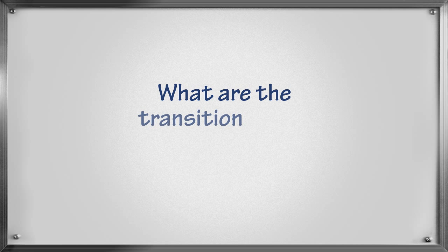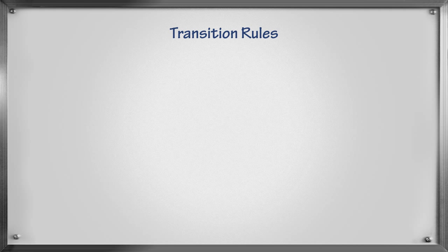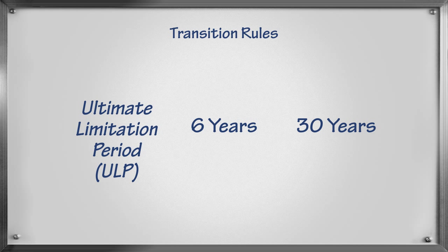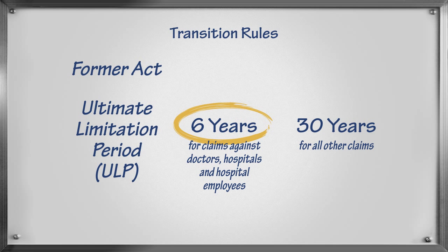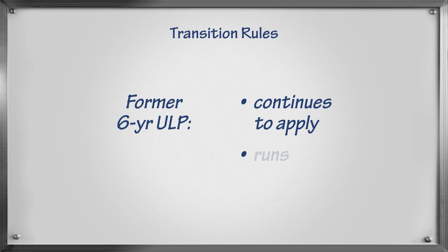The transition rules govern two situations depending upon whether a plaintiff's claim would have been governed by the 30-year or 6-year ultimate limitation period under the former act. We will be looking at how the transition rules apply if a plaintiff's claim is against a doctor, hospital, or hospital employee and would have been governed by the 6-year ultimate limitation period under the former act. If this is the case, the transition rules say that the former 6-year ultimate limitation period continues to apply. Time begins to run as it had under the former act, from the date that all of the elements of the legal claim were present or accrued.